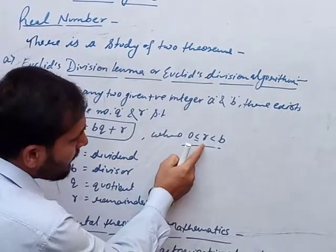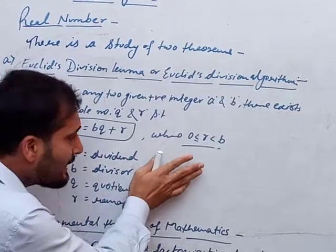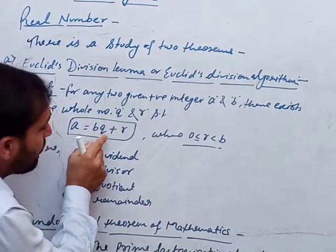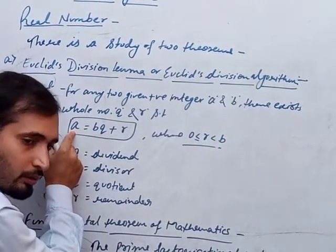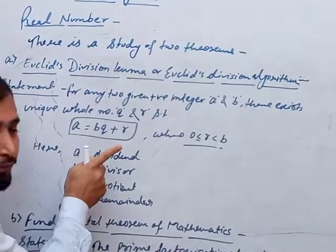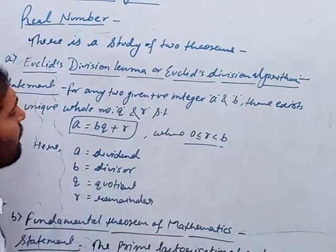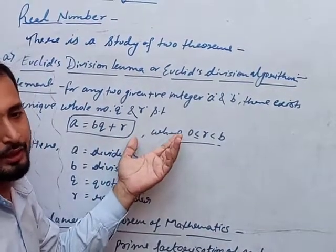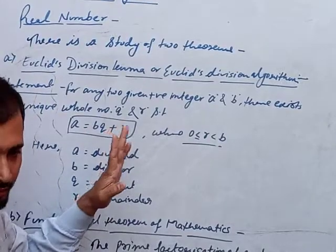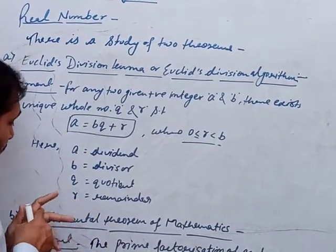If r is equal to zero, then we can easily say that b is a factor of a. If r is zero, b is a factor of a. But if r is not zero, then we cannot say b is a factor of a — that is, b is not a factor of a.